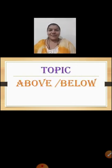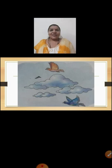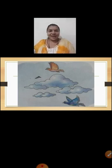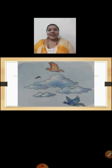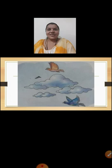Today we are going to learn the position words above and below. Now look at this picture children and tell me, what is the position of the orange color bird? In this picture, we can see two birds and pictures of clouds. An orange color bird is flying above the clouds and a blue color bird is flying below the clouds. Above and below are the opposite position words, which shows their directions.